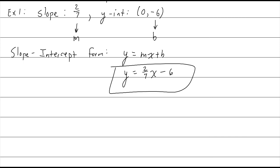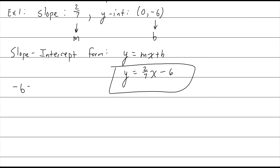Something I want to point out: every time you write out the equation of a line, you will always have a y and an x present — at least for any line that's not horizontal or vertical. You're never going to have all numbers. So what I don't want you to do is plug in x and y and say negative 6 equals 2/7 times 0 minus 6. That is not an equation of a line. So y = 2/7 x minus 6.